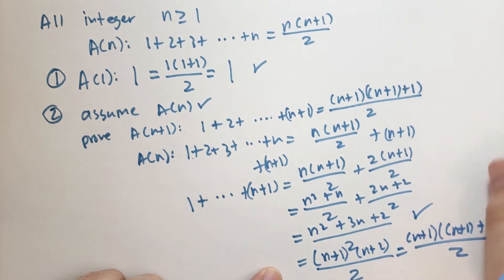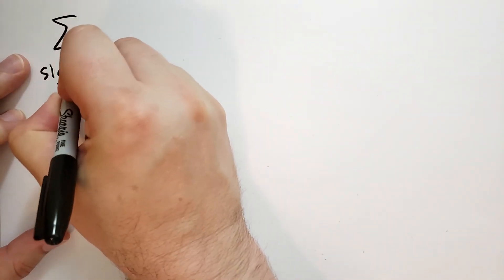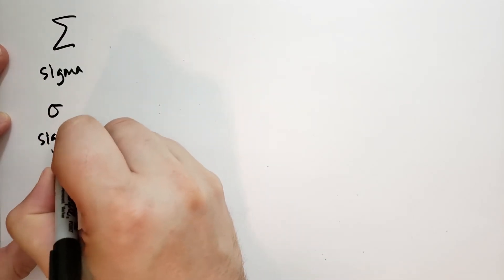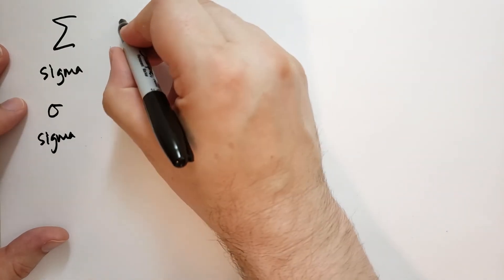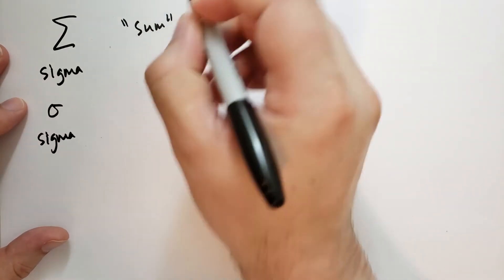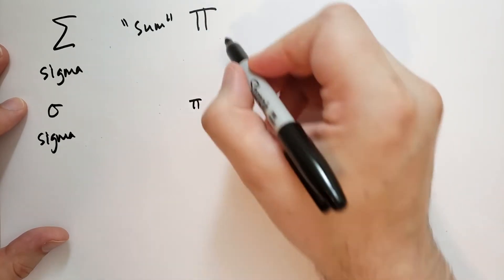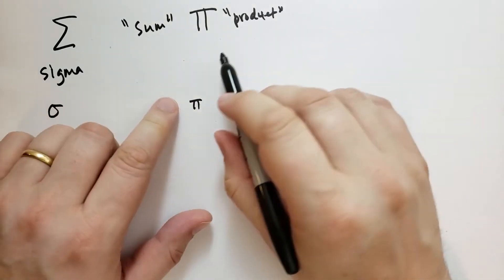At this point in the book he takes a break to talk about notation. He says, you remember that funny squiggly line? This is called sigma — uppercase sigma. Lowercase sigma looks like this. It stands for the word 'sum.' There's also pi and lowercase pi, which stands for 'product.' You probably won't see pi too often.